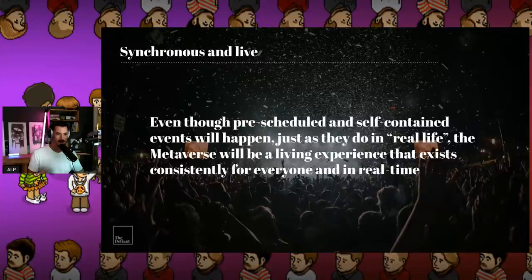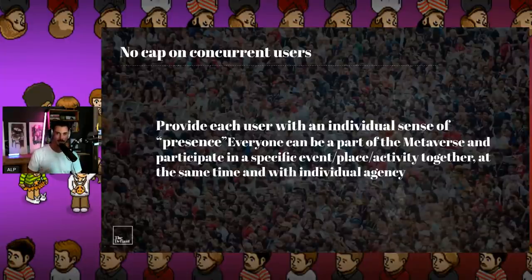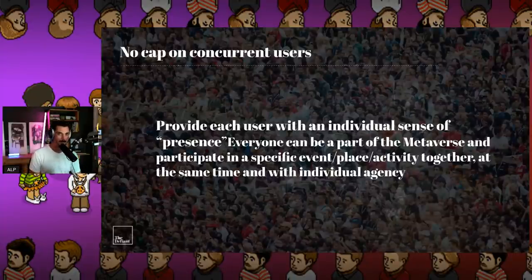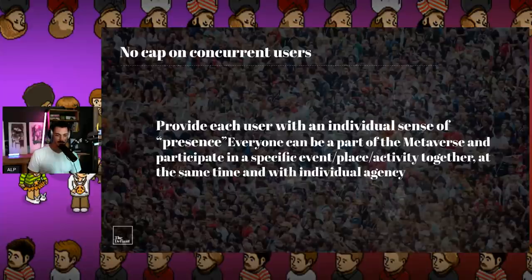There's no cap on concurrent users — everyone can be a part of the metaverse and participate in a specific event, place, or activity together at the same time with individual agency. That Travis Scott concert was a great example: 12.5 million people all coming together, the software didn't crash, Fortnite didn't break. They were all able to experience it in their own way. That word agency is very, very important — we'll come back to it.